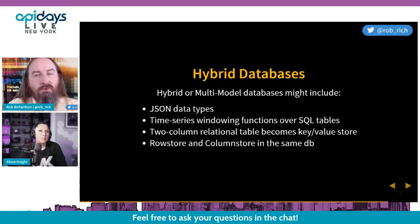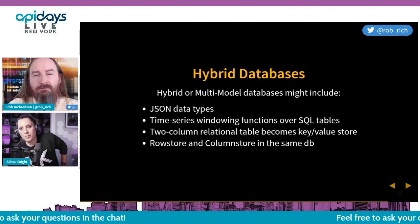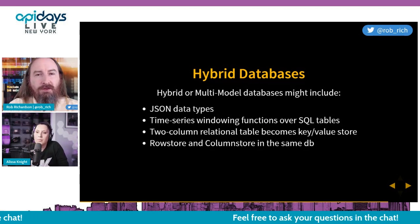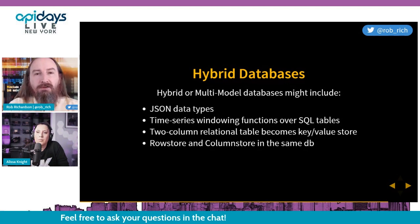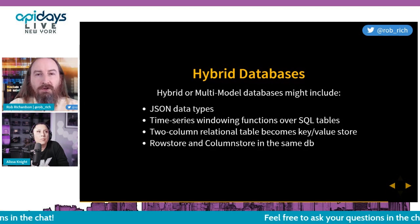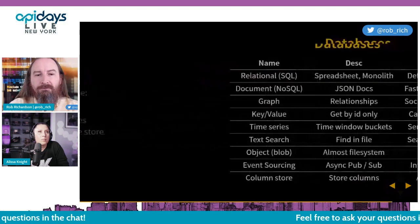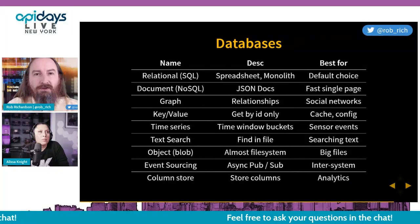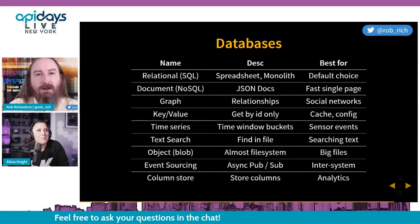Hybrid databases: we've looked at many different types of data stores and seen pros and cons in each. What if you want something that can do lots of things? What if you have a relational database but also a JSON column that allows document data processing? What if you have a time series windowing function inside your SQL database? Hybrid databases are really elegant and expand our views beyond a single type. Here's a summary slide — take a screenshot — showing each data store, its description, and what it's best used for.